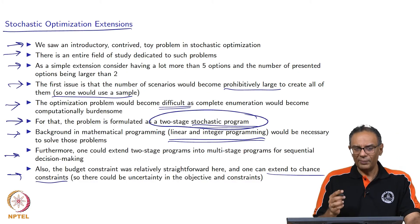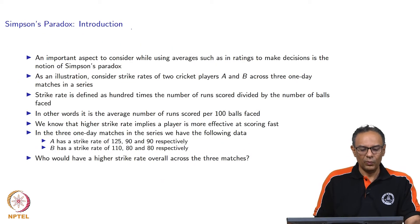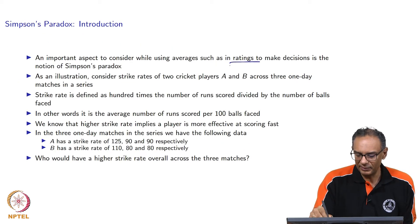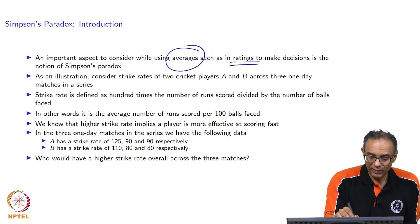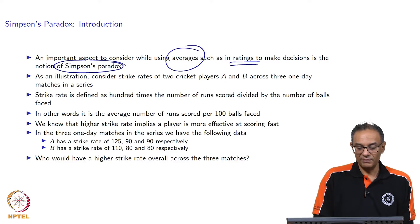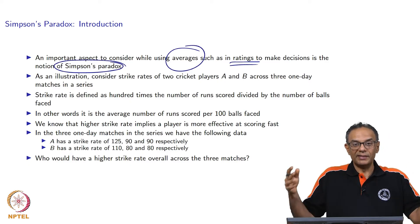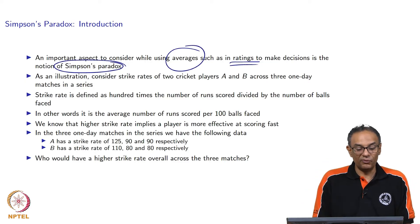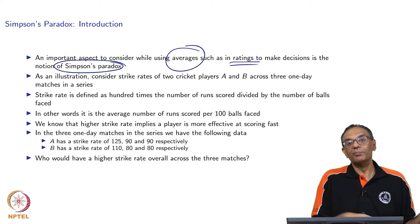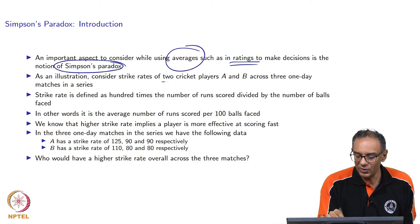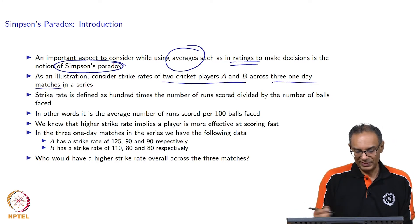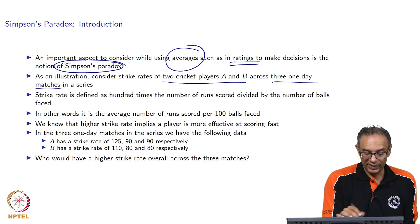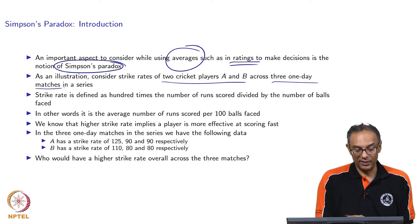The next topic I want to talk about is something we need to be very careful about — we dealt a lot with the idea of using ratings. We use averages to make rating decisions. It turns out we have to be careful about something fascinating called Simpson's paradox, because whenever companies give you ratings, they may not necessarily give you the full picture. Let us look at this through a completely different situation: two cricket players A and B in a series of three one-day matches.